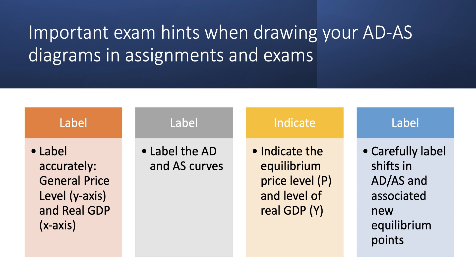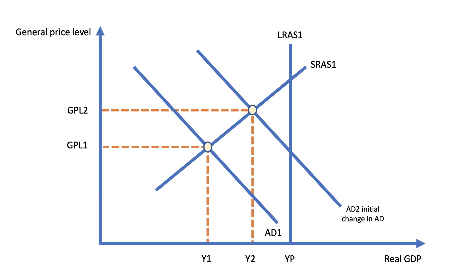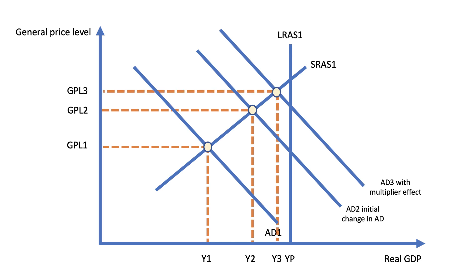In our initial situation, national output is at Y1 and general price level at GPL1, with the economy operating with a negative output gap since Y1 is less than Yp. An injection of demand — from investment, government spending, or exports — shifts the aggregate demand curve to AD2, leading to an expansion of aggregate supply and a new equilibrium at output Y2 and price level GPL2, using up some spare capacity. With a positive multiplier, the final increase in demand is higher than the initial change, so we might end up at AD3 instead of AD2, taking the economy to a higher national output Y3, getting close to potential output.